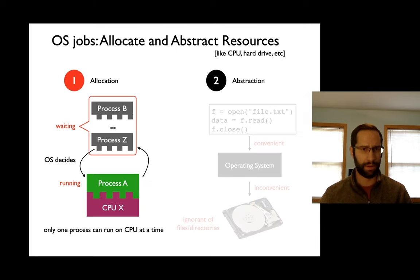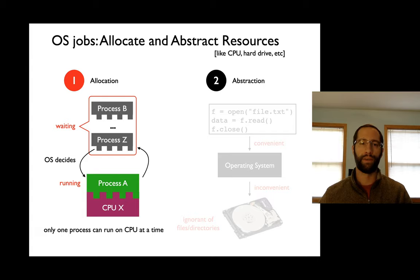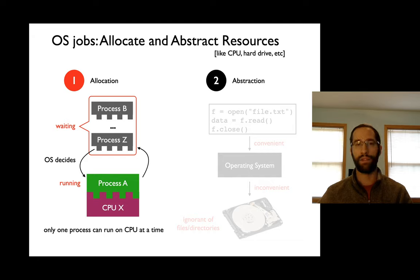So, operating system — I'm going to abbreviate OS. The OS worries about what jobs, or processes, we want to run on our computer. It kind of has two jobs in this regard: how can it allocate resources to these processes, and also abstract those resources? Abstraction is kind of a funny word — I'll talk more about that. Let's talk about allocation first.